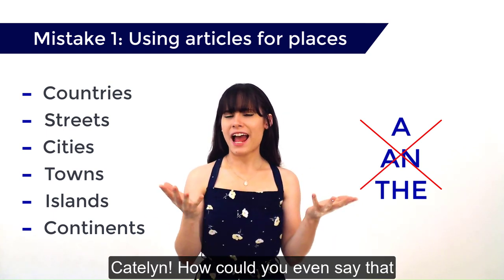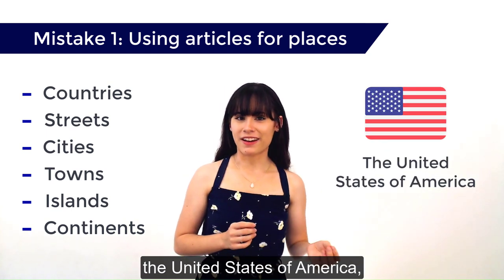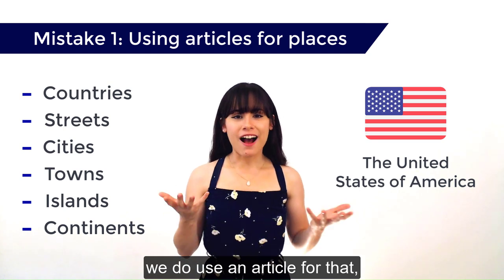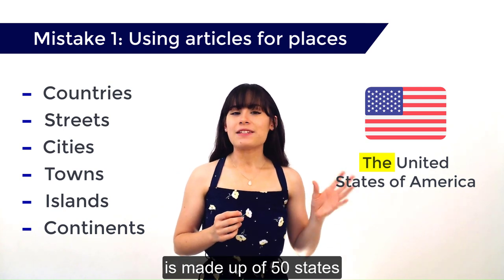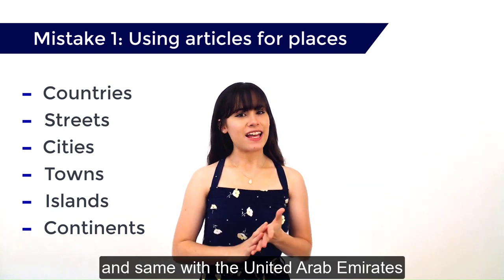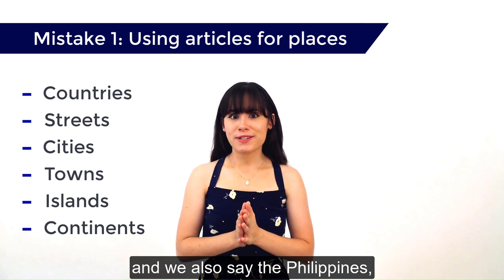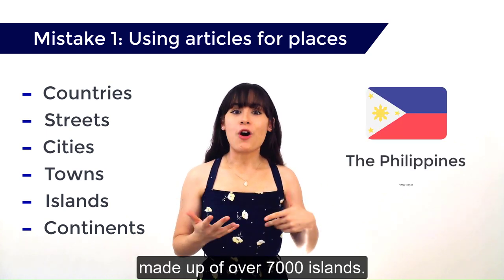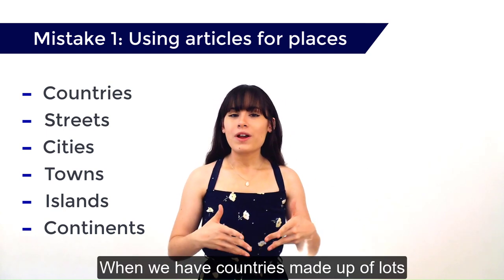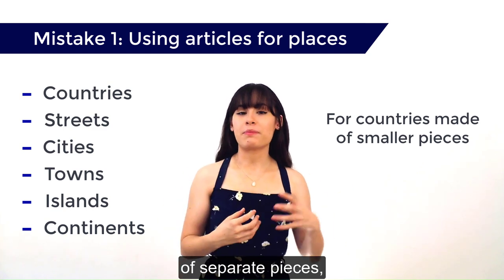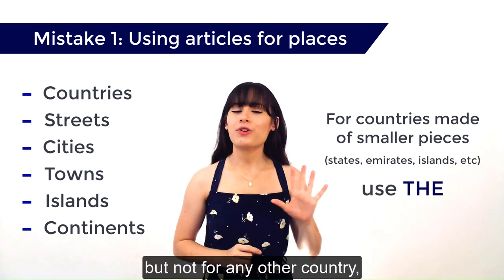But you might be thinking, Catalan, how could you even say that? When everybody knows that it is the United States of America. And you would be correct — we do use an article for that. But I want you to realize that the United States of America is made up of 50 states. And same with the United Arab Emirates, made up of seven emirates. And we also say the Philippines, made up of over 7,000 islands. So can you see a little bit of a pattern here? When we have countries made up of lots of separate pieces, whether that be an emirate or a state or islands, then we use the, but not for any other country.